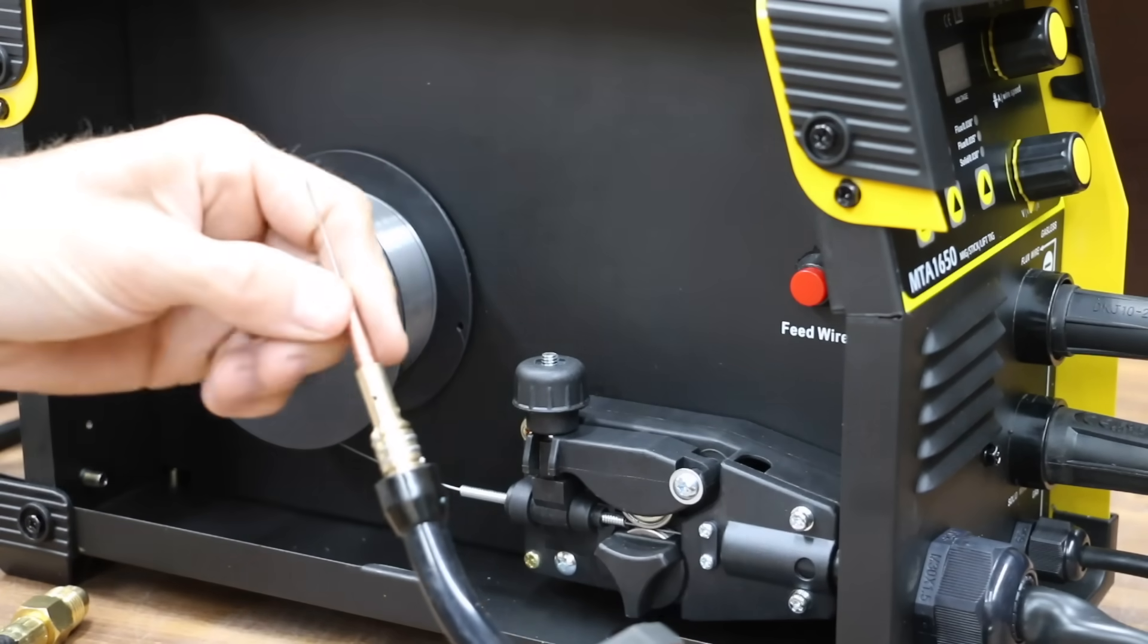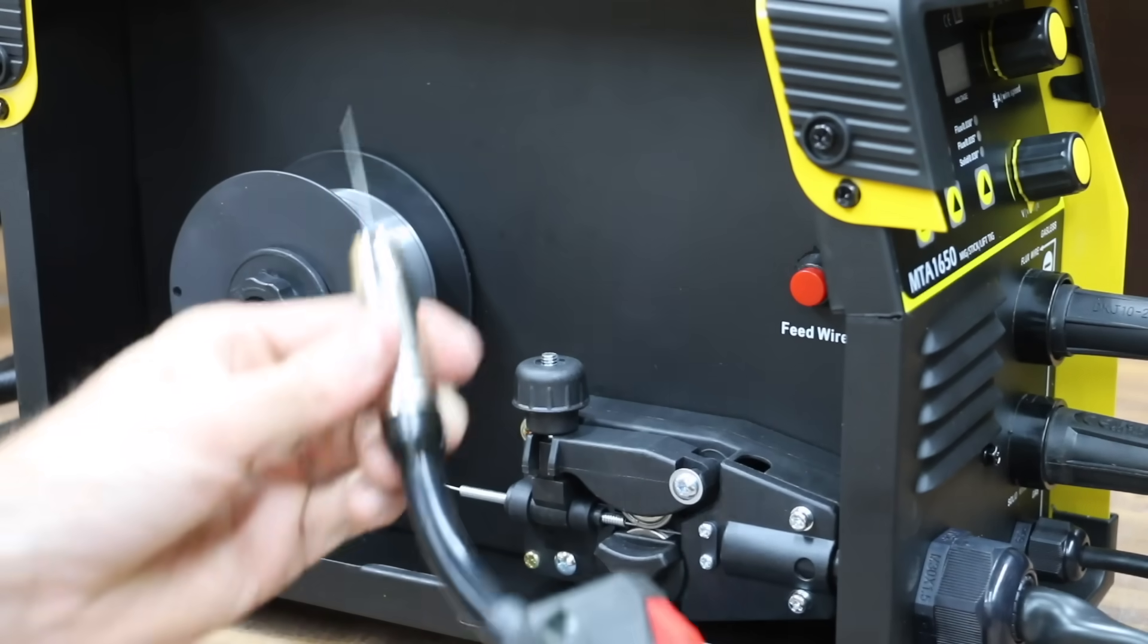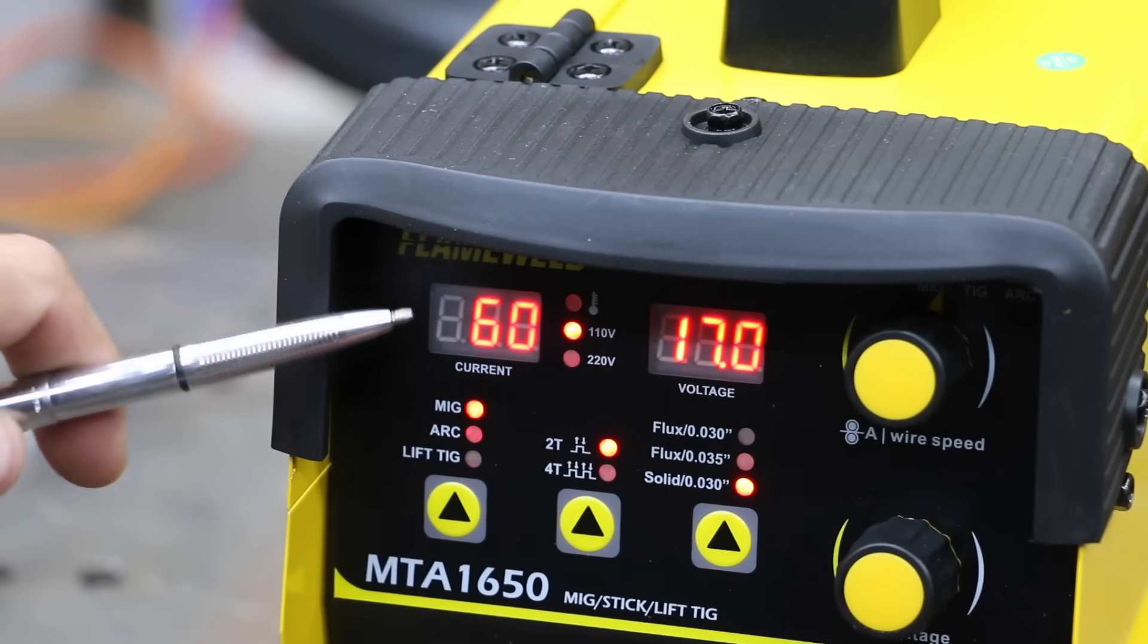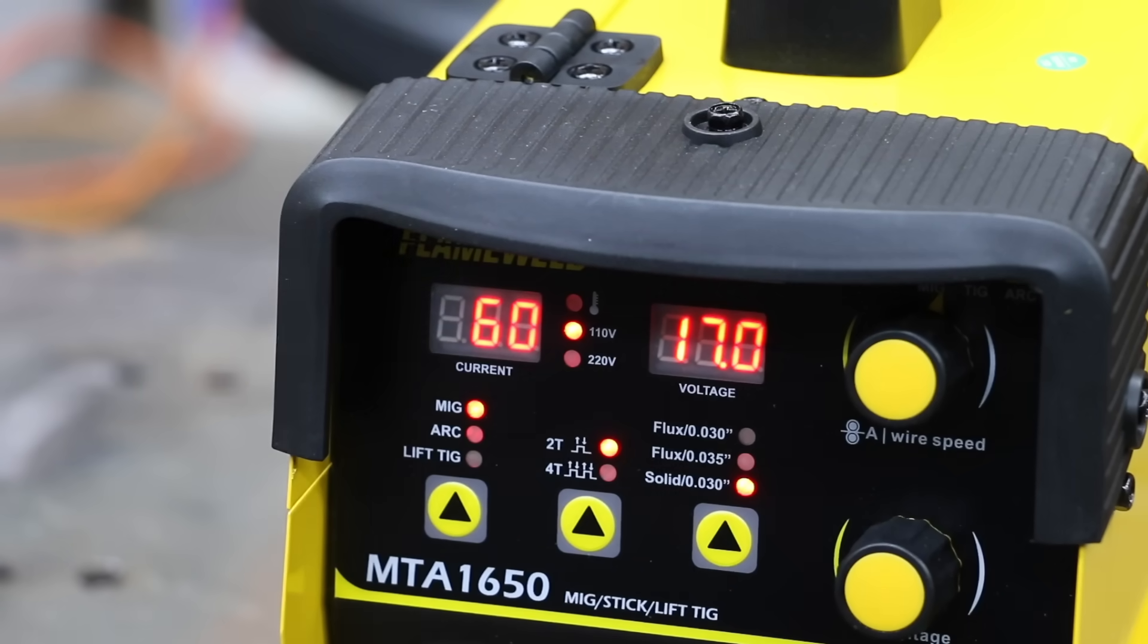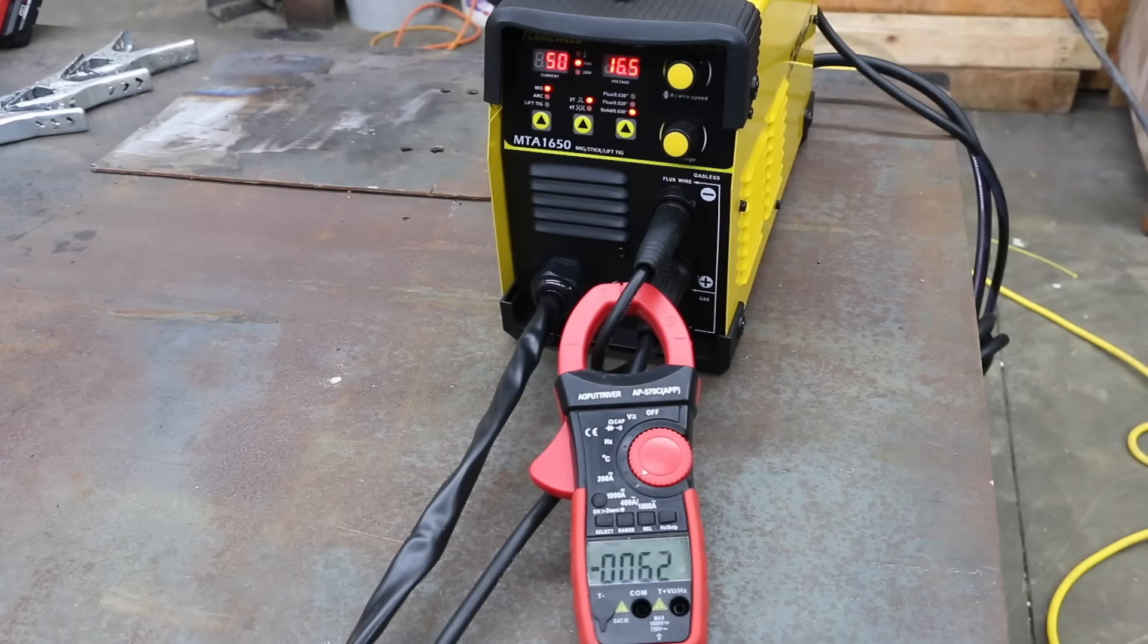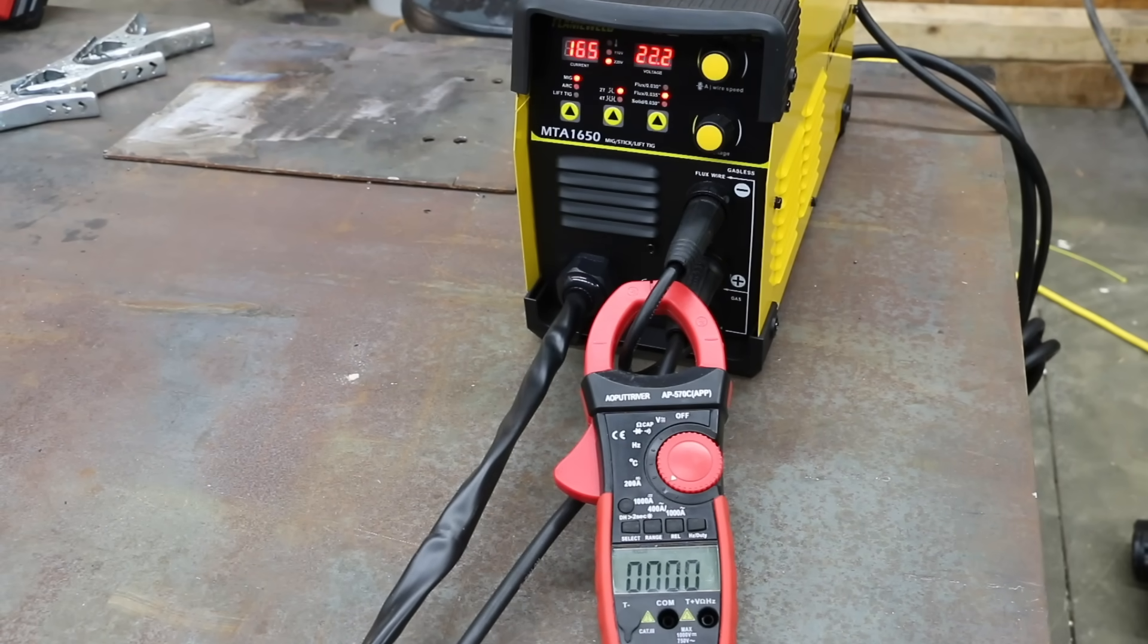Using 0.035 flux core wire, let's go ahead and measure the lowest and highest possible current. I'm going to lower the current from 60 to 50 amps. And the wire speed is off a little, but the current varied from 37 to 97 amps on the 50 amp setting. The Flame Weld started at 158 amps and it dropped to 151 after three seconds.